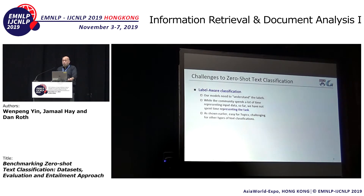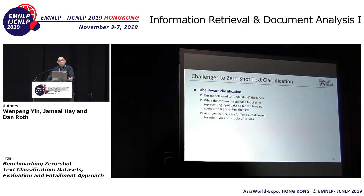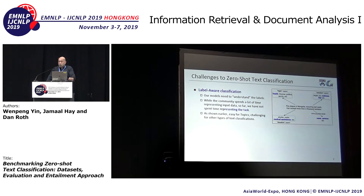What we're trying to do here is basically develop a paradigm for zero-shot text classification. There are multiple challenges. The key one is that we need to start thinking about label-aware classification — models that understand the labels. Our community spends a lot of time representing input data, but we don't represent the task. We're suggesting that you have to think about how to represent the task. It's easy to do for topics; it's harder for other types. Here we want to look at a piece of text, identify topics, but also identify emotions expressed in it, identify situations, and so on.